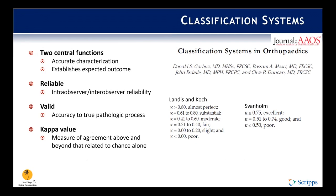The successful classification system must be both reliable and valid. Reliability reflects precision of a classification system. In general, it refers to inter-observer reliability — the agreement between different observers. Inter-observer reliability is agreement of one observer's repeated classifications of an entity. The validity of a classification system reflects the accuracy with which it describes a true pathologic process.